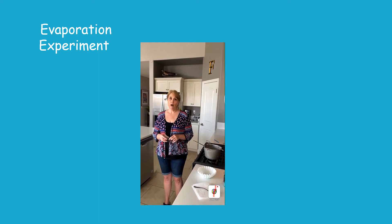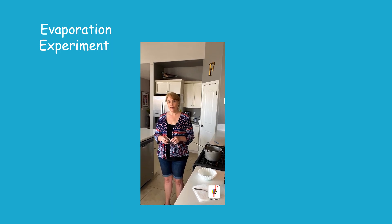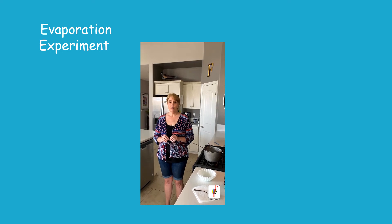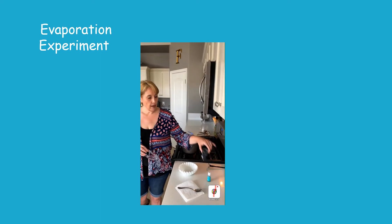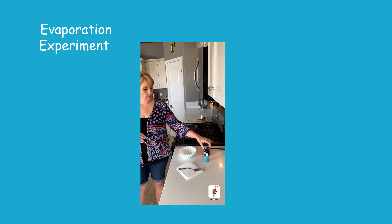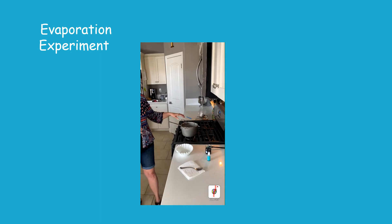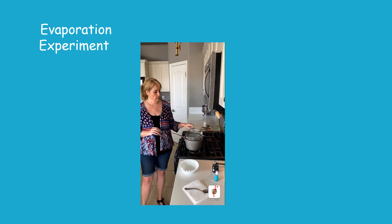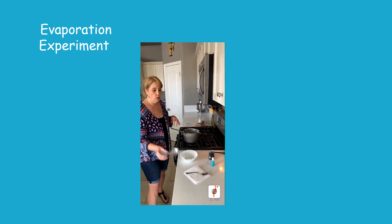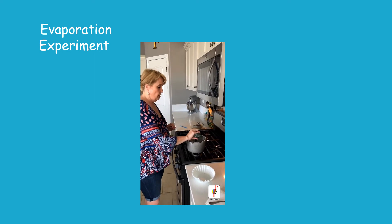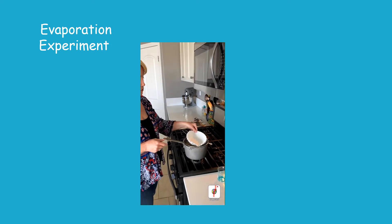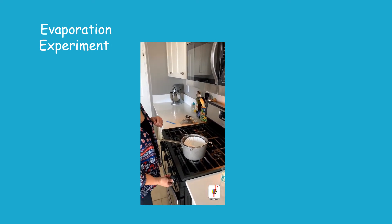Hi kids! We've talked about the three states of matter: liquid, solid, and gas. Gas is formed through a process called evaporation. In nature, the sun provides the heat that causes water to evaporate. Today we're going to do an experiment that mimics that process. Here are the ingredients: a half cup of water with six drops of food coloring, some coffee filters, a pan, and a basket to put the coffee filters into. We're going to pour the water and food coloring into the pan, set the coffee filters into the basket, and turn up the heat.